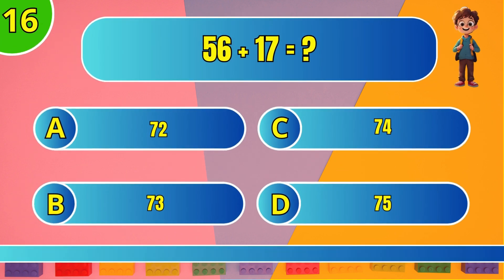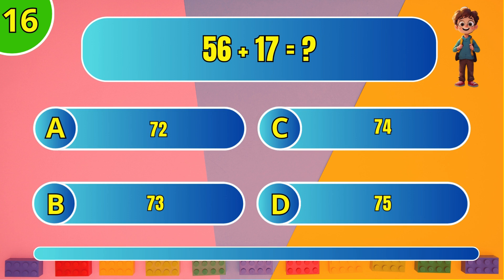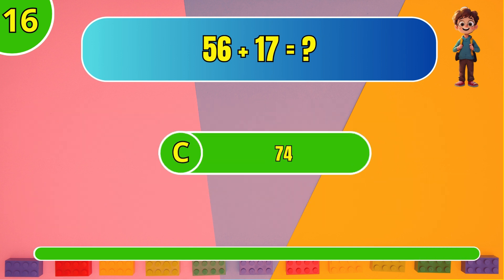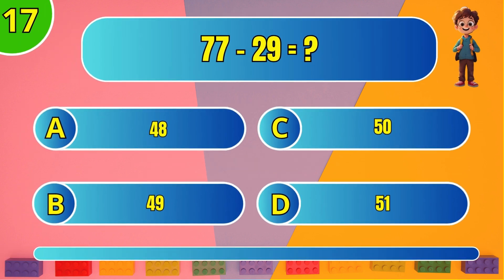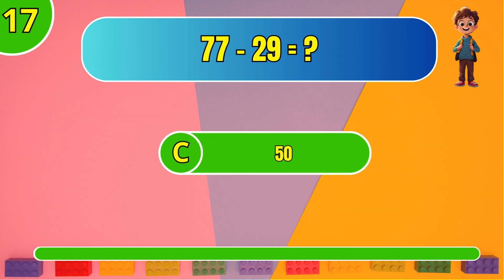What is 56 plus 17? C: 74. What is 77 minus 29? C: 50.